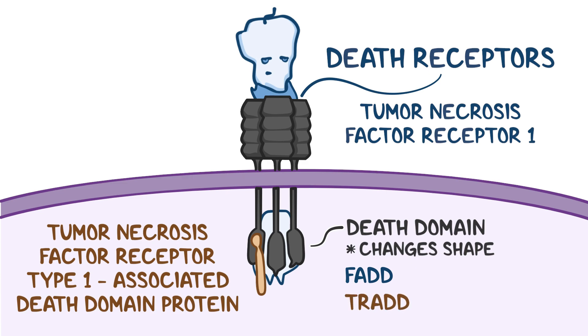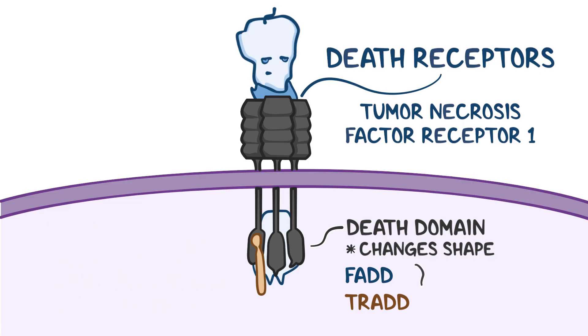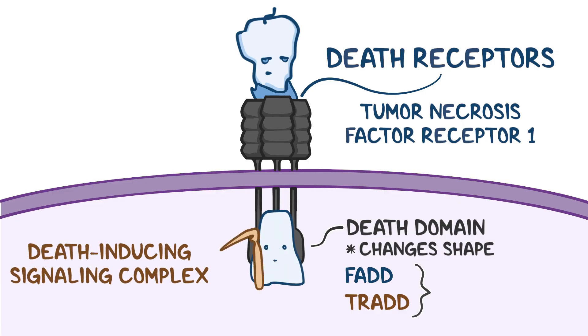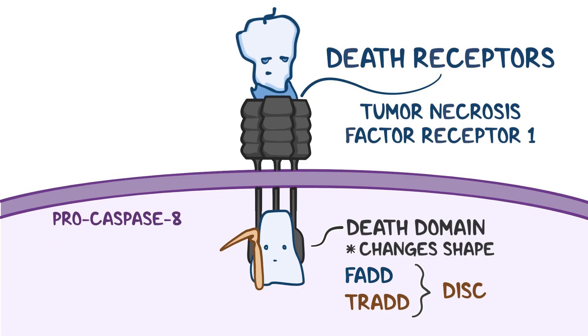So, the death receptor, FADD, and TRADD come together to form a multi-complex protein called, wait for it, the death-inducing signal complex, or DISC. Once everything is together, DISC cleaves procaspase-8 into caspase-8, which in turn activates caspase-3, and caspase-3 goes on to activate other caspases.